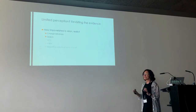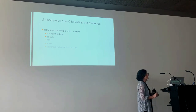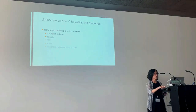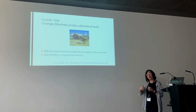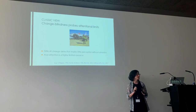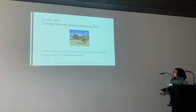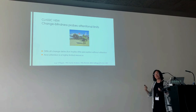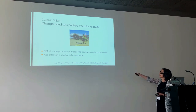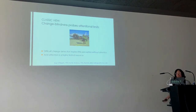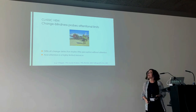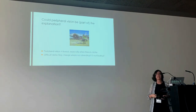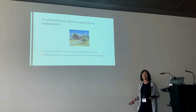Let's revisit the evidence for limited perception in vision, starting with change blindness and search. The idea behind change blindness was that difficulty detecting a change implies little perception without attention — change detection is slow because you have to move a spotlight of attention around until you land on the change. But the question we want to ask is: could peripheral vision be at least part of the explanation?